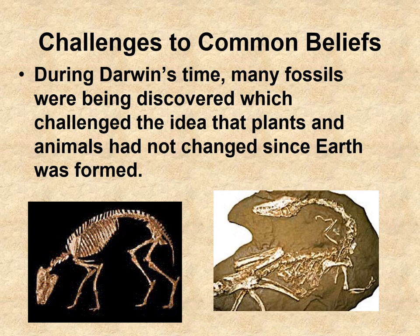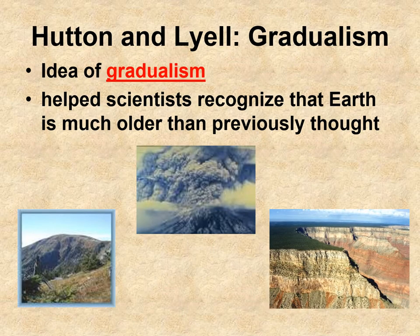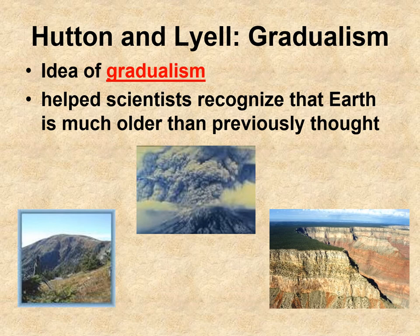It was a very religious society that believed God created the earth in seven days. However, there were challenges to these beliefs — during Darwin's time, many fossils were being discovered that challenged the idea that plants and animals had not changed since the earth was formed. Two people, Hutton and Lyell, came up with what is now called gradualism. Gradual means slowly over time, and they used this term to talk about changes in the earth — volcanoes, earthquakes, plate tectonics, and erosion — which happens slowly. This helped scientists recognize that the earth might be older than previously thought.